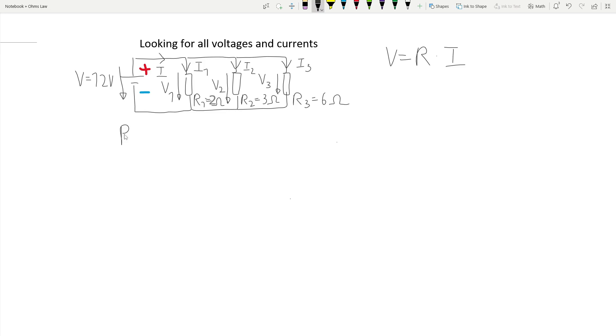In a parallel circuit we have one very important rule. The voltage in a parallel circuit is the same on every resistor. This means that in our case, the voltage V equals the voltage on resistor R1 and also V2 and also V3.